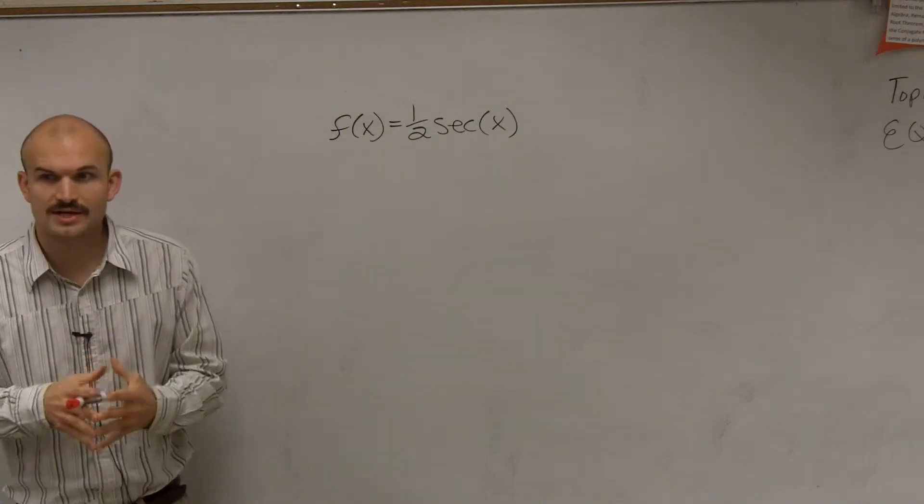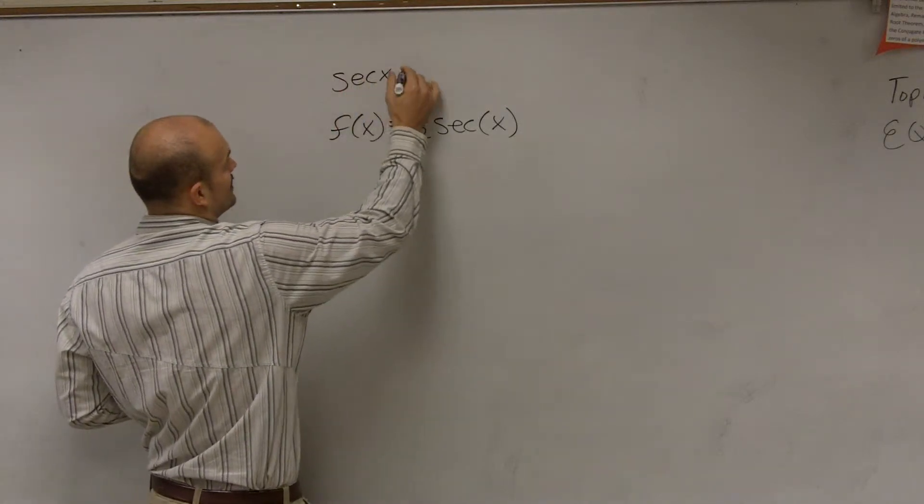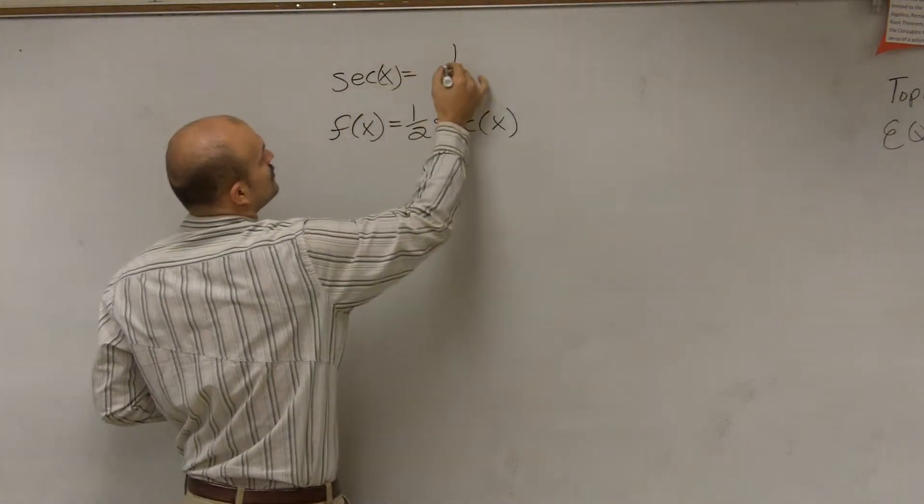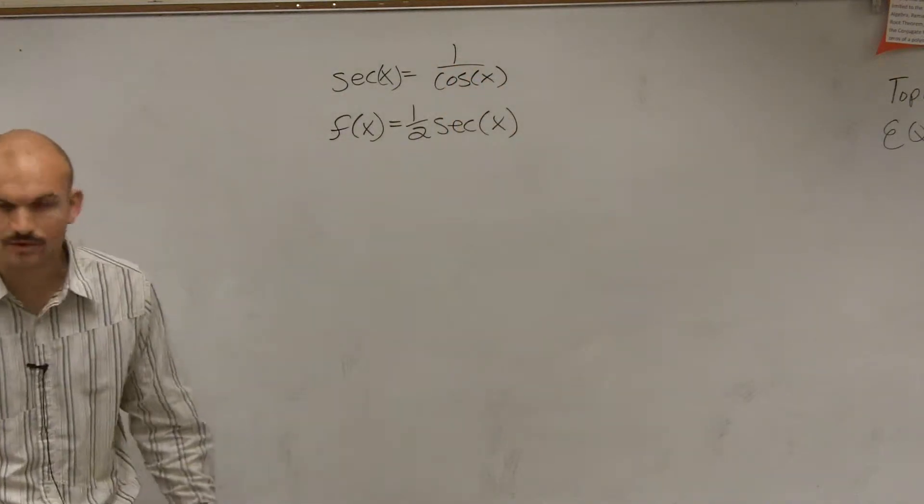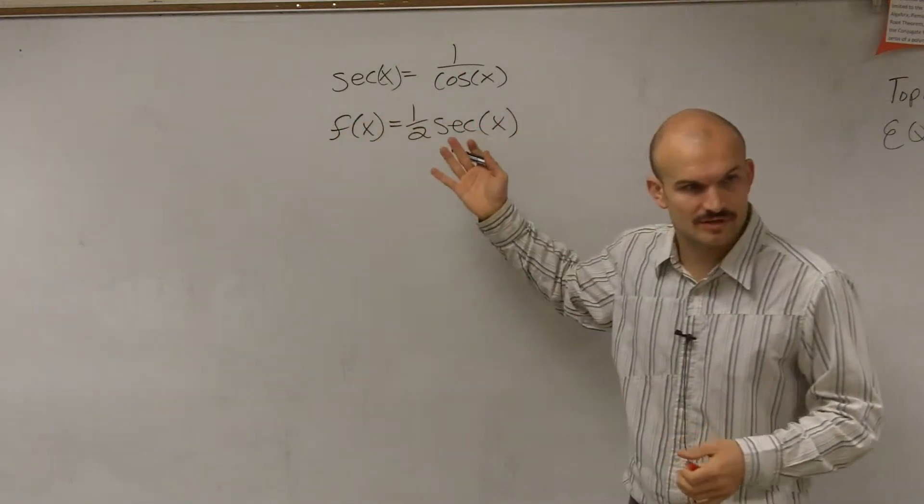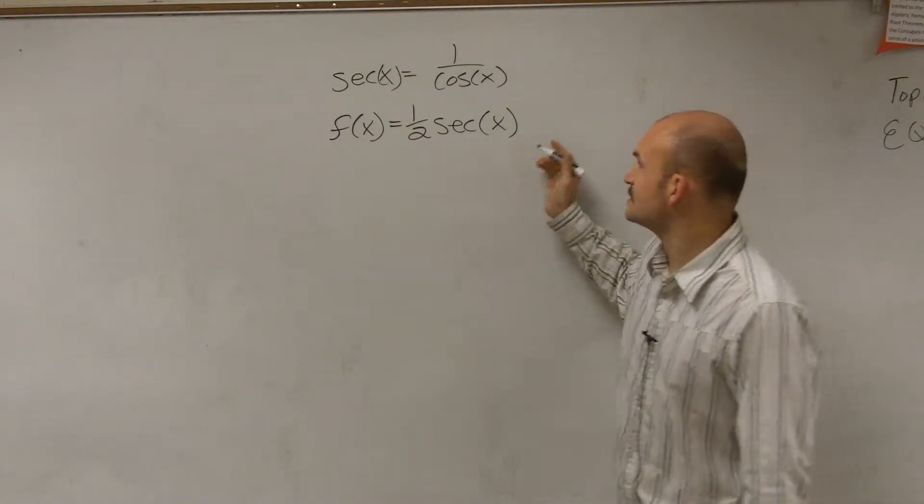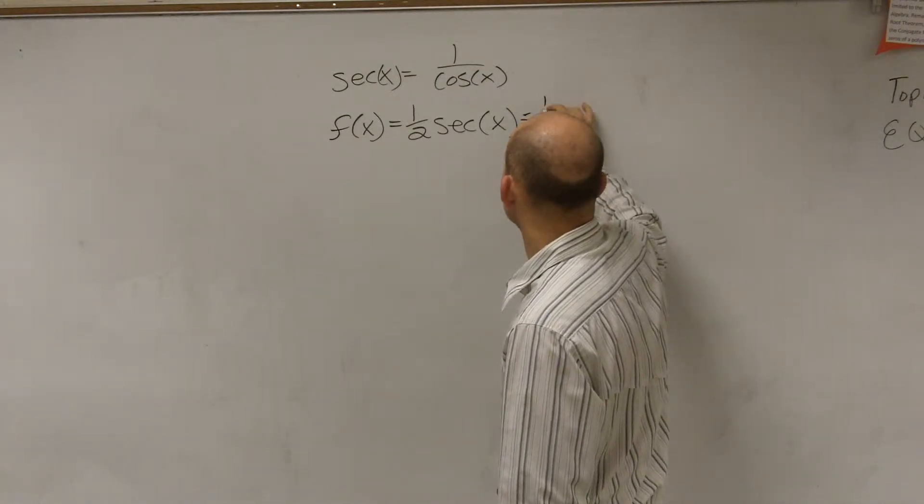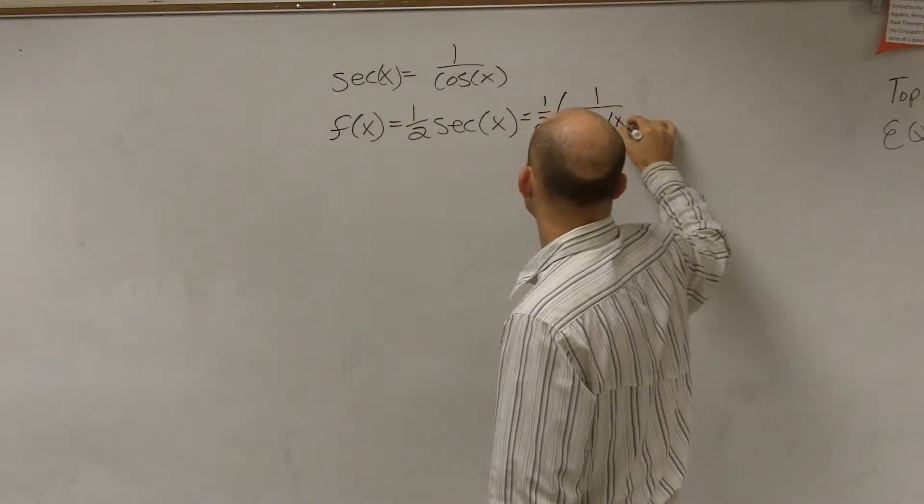The main important thing I want you guys to understand is remember that secant of x is equal to 1 over cosine of x. These are part of our reciprocal identities that we talked about and worked with. We remember that these are reciprocals of each other. Therefore, this can be the same thing as 1 half of 1 over cosine of x.